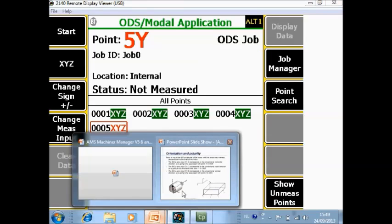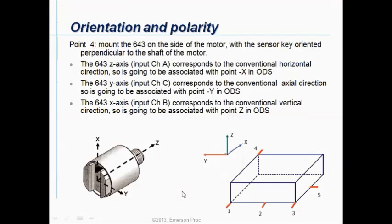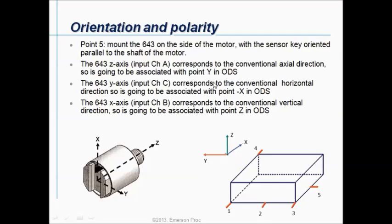But also for point 5 let's explain it first in a PowerPoint. In point 5 the influence is bigger because in point 5 now the mounting direction of the sensor becomes completely different. Now the mounting direction your channel A has to be associated with Y. Your channel C has to be associated with minus X. And your B has to be associated with Z.